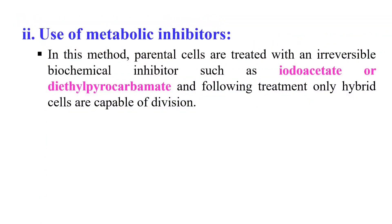The second way of selection of hybrids is the use of metabolic inhibitors. In this method, we treat the parent cells that we are taking for fusion with some inhibitors like Iodoacetate. After the treatment, only hybrid cells can grow, while the parent cells become metabolically inactive due to these inhibitors. But after fusion, hybrid cells are able to grow and able to divide.